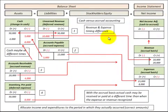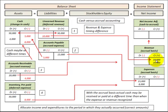Here we're going to look at the difference between cash and accrual accounting. The basic difference is a timing difference in when we recognize our revenue and expenses. For our cash basis, we recognize our revenue when the cash is actually received, and for our expenses, we recognize them when we actually pay the cash.